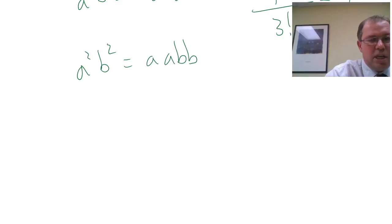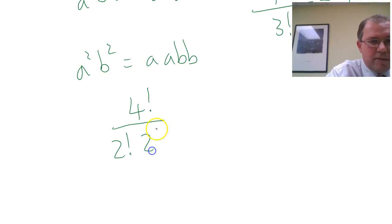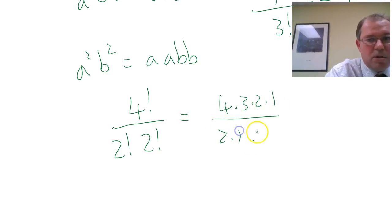How many ways are there of arranging a, a, b, b? So here we go. Imagine they're all different, so that would be 4 factorial, because I've got 4 items in total. But I have 2 a's, so it's divided by 2 factorial. And I've got 2 b's, divided by 2 factorial. And let's work this out. This is 4 times 3 times 2 times 1, over 2 times 1 times 2 times 1. Those 2 times 1's cancel.